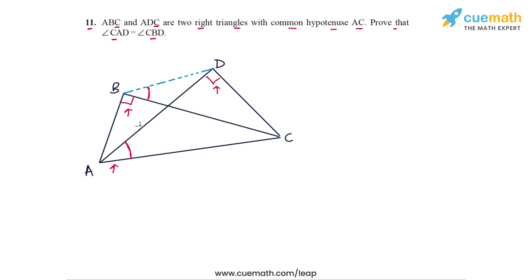One assumption made in drawing this figure is that B and D, the right-angled vertices, lie on the same side of the hypotenuse AC. However, this is not given in the problem statement. We must also consider the case where B and D lie on opposite sides of AC, so we are currently considering only one of two possible cases.